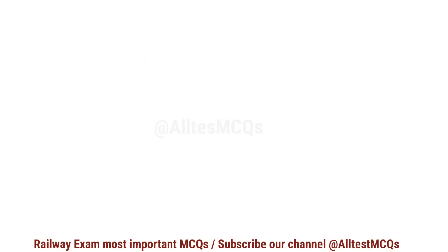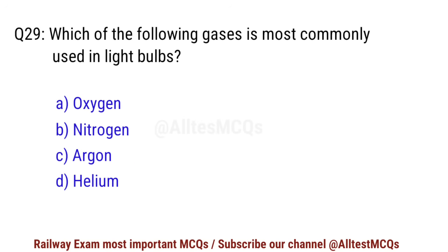Q29. Which of the following gases is most commonly used in light bulbs? Right option is C. Argon.